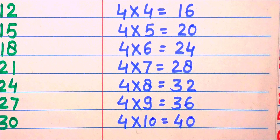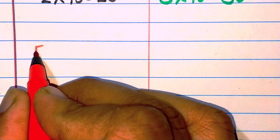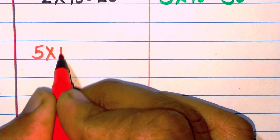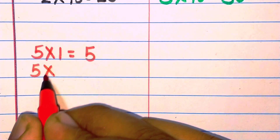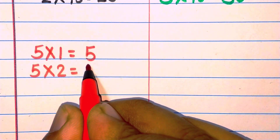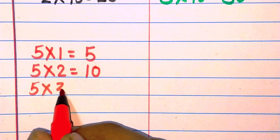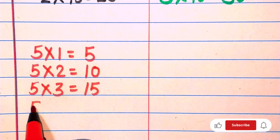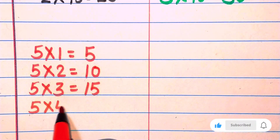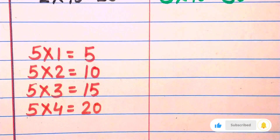Next, table of five. Five one are five, five two are ten, five three are fifteen, five four are twenty, five five are twenty-five.